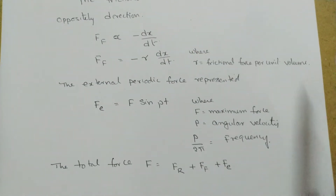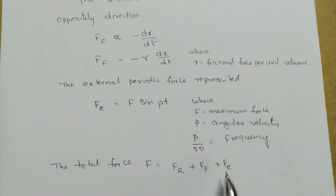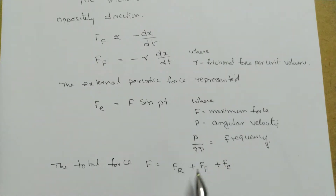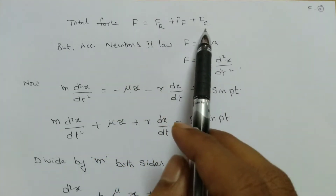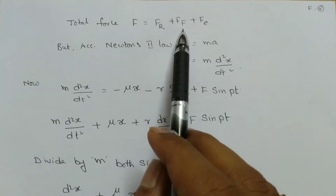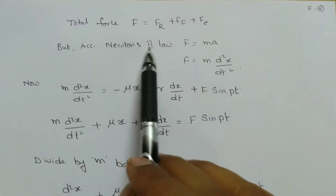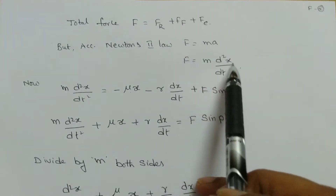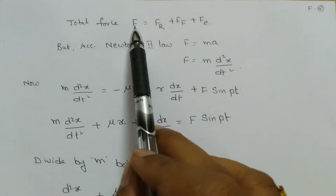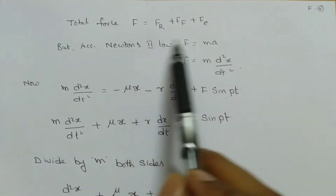The total force is the sum of restoring force, frictional force, and external periodic force: F = Fr + Ff + Fe. In damped oscillation there is no external periodic force, but in forced oscillation this extra term is added. According to Newton's second law, F = ma, which we write as m(d²x/dt²).